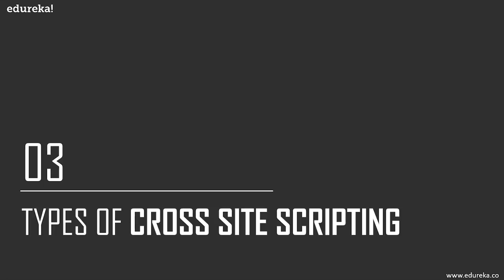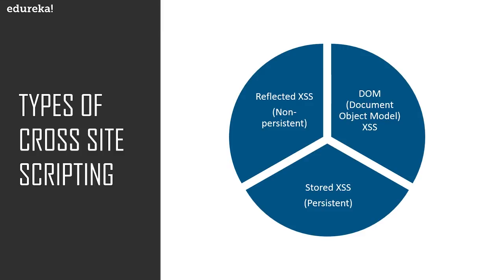There are mainly three types of cross-site scripting attacks — also known as XSS. The first is reflected XSS, where the data is not stored on the web server. The second is DOM-based XSS, which makes use of the Document Object Model to inject the malicious script. The third is stored XSS, where the malicious script is stored on the web server.